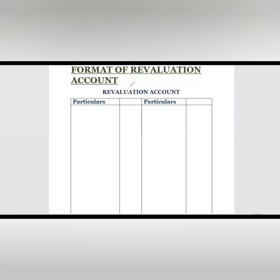Now let's see the format of the revaluation account. It has four columns: on the left side is the debit side with particulars and amount, and on the right side is the credit side with particulars and amount. If there is any increase in an asset, we record it on the credit side. If there is a decrease in any liability, or an unrecorded asset, we also record those on the credit side.